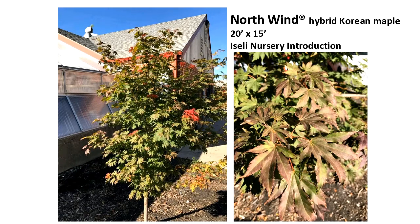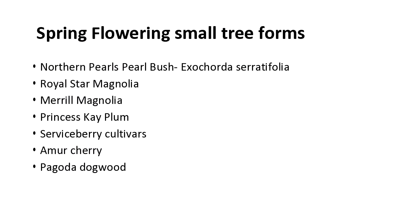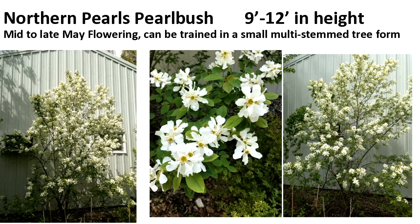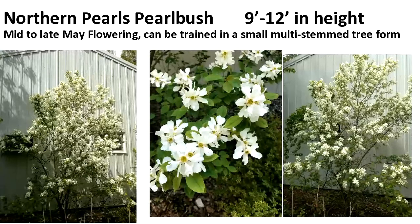I want to talk about some small spring flowering tree forms — some of these may even approach more of a tall shrub, but I'll include them. Spring here, we like to see flowers, something bright and unique. One that I really like and have watched for a number of years is called Northern Pearls pearl bush. It's in the genus Exochorda, which is not hardy here, but going to those Korean higher altitude, northern areas there's another species — Exochorda serratifolia — from which the University of Minnesota has selected a totally hardy plant.